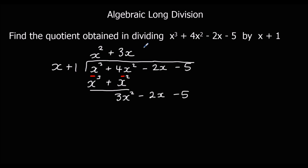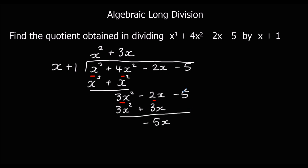3x goes up in the quotient, and we follow the same steps again: multiply 3x by both terms. 3x times x is 3x squared, and 3x times 1 is 3x. Then we subtract: 3x squared minus 3x squared is nothing. We have minus 2x and we're taking away 3x, giving us minus 5x. We bring down the last term, minus 5.